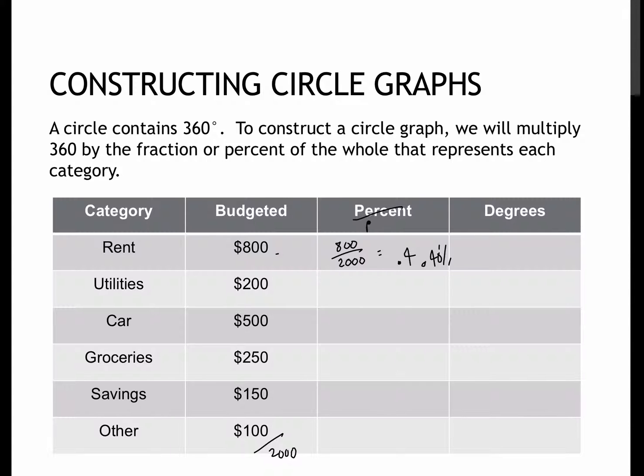And I'm actually just going to turn these into decimals because I know that when I multiply, I'm going to take my 0.4 times 360. And if I multiply 0.4 times 360, I get 144 degrees.